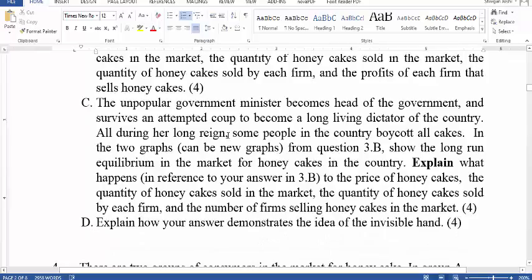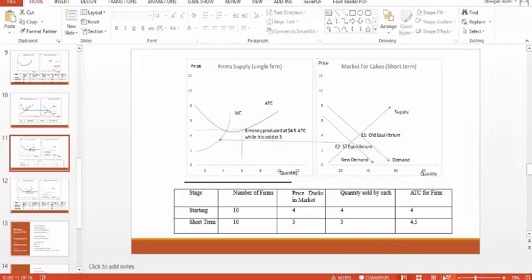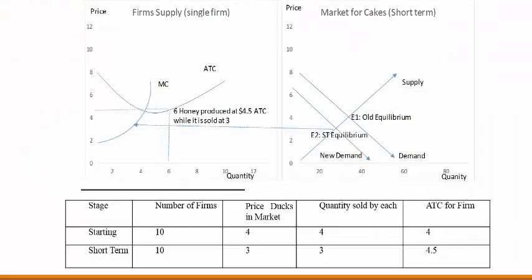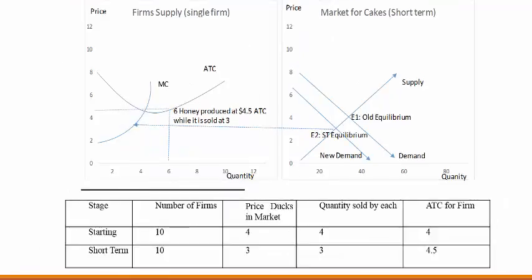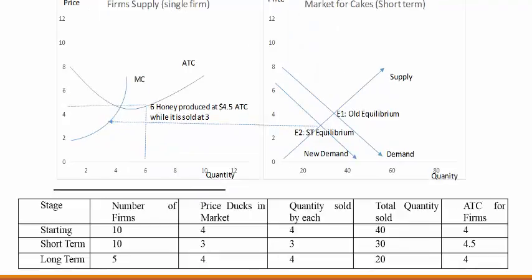During the long term, some people in the country boycott all cakes. In two graphs show the long term equilibrium. So this thing persisted and people did not change. So the market has to find its new equilibrium now because this guy who caused the boycott survived and people are still boycotting the product. So if that would happen then we will have a long term equilibrium.